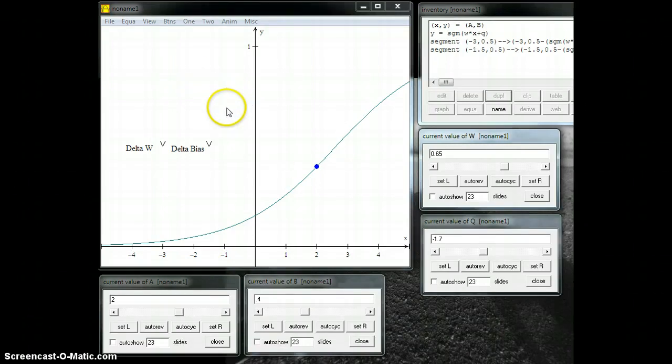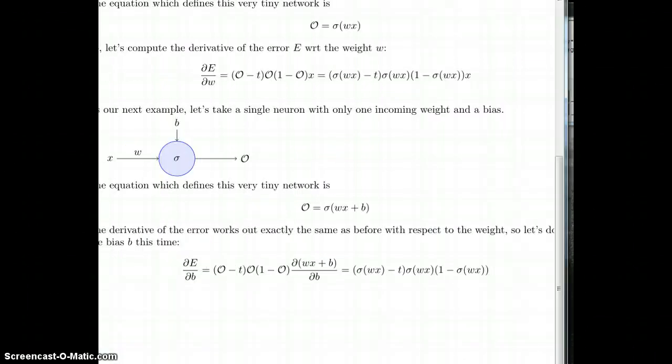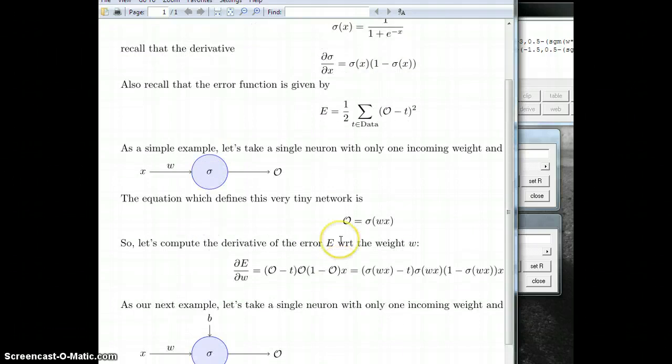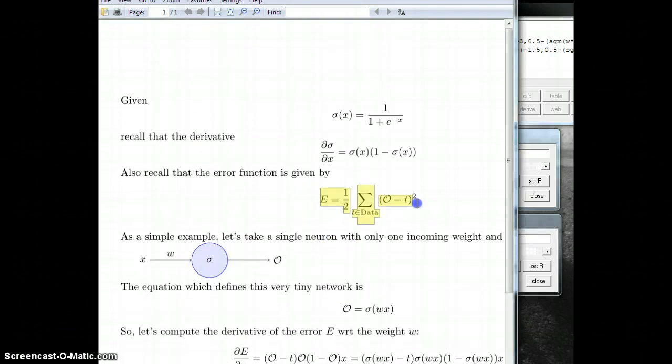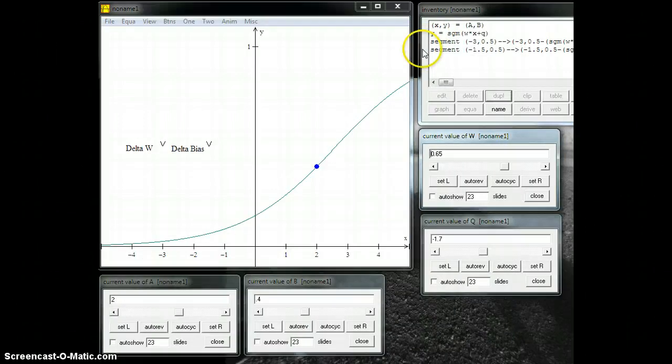Now where this will get more useful is when I start to have more than one data point. Now remember, if we bring this back up, that the error is a sum. So let me create a second data point and adjust all of the equations and I'll show them to you when I'm done, but I'm not going to make you watch. And then I'll plot both of the data points and then we'll see how both of these play out.